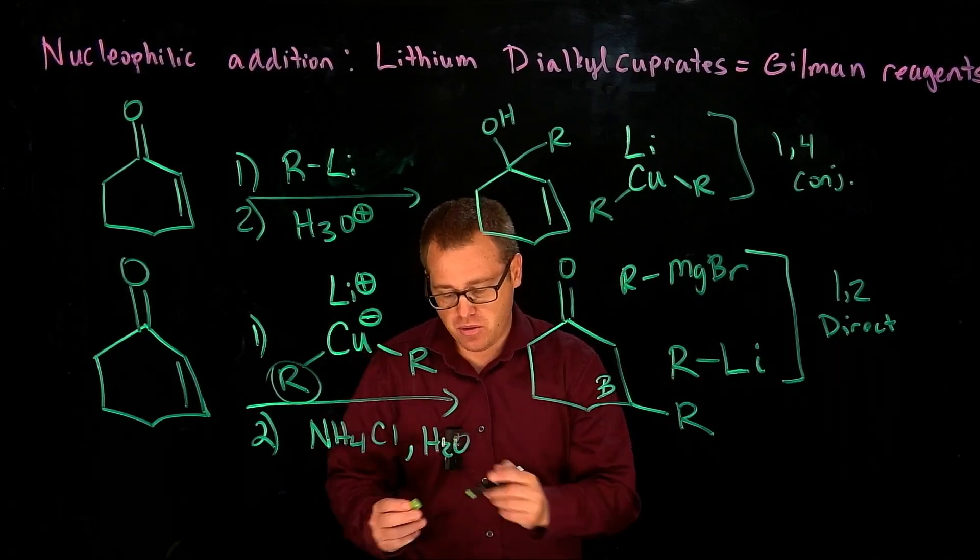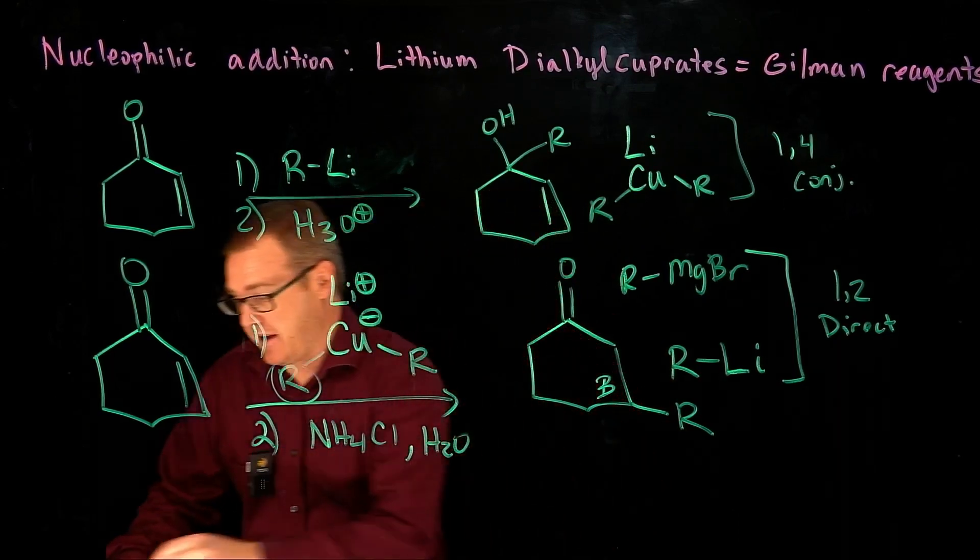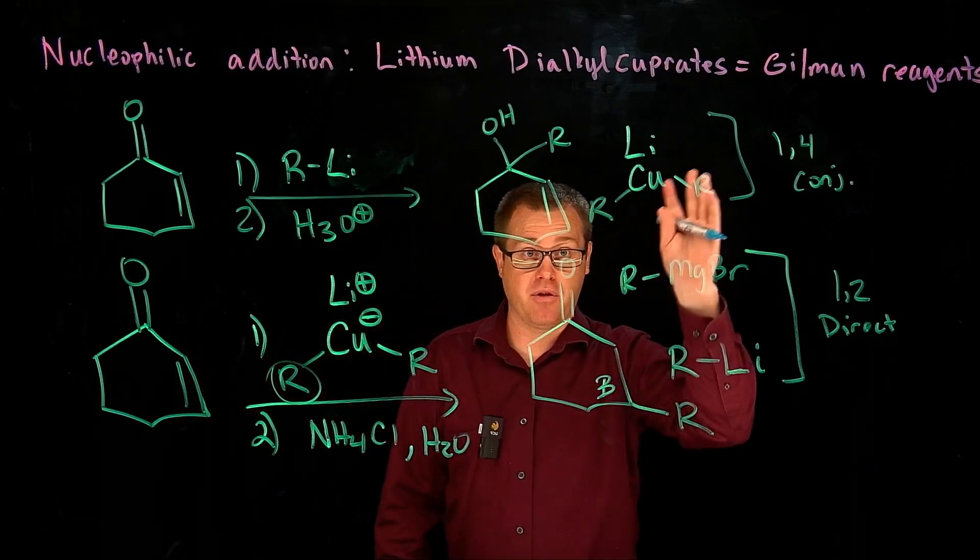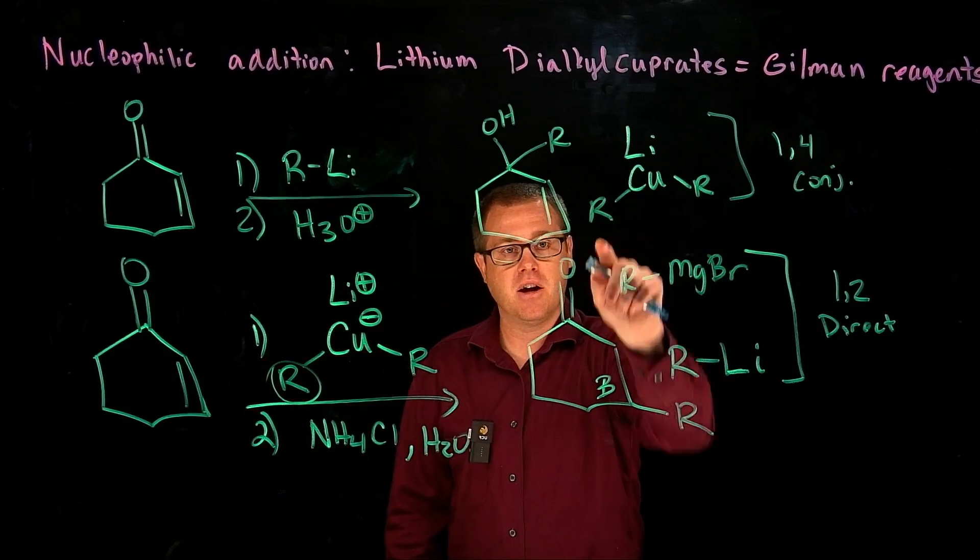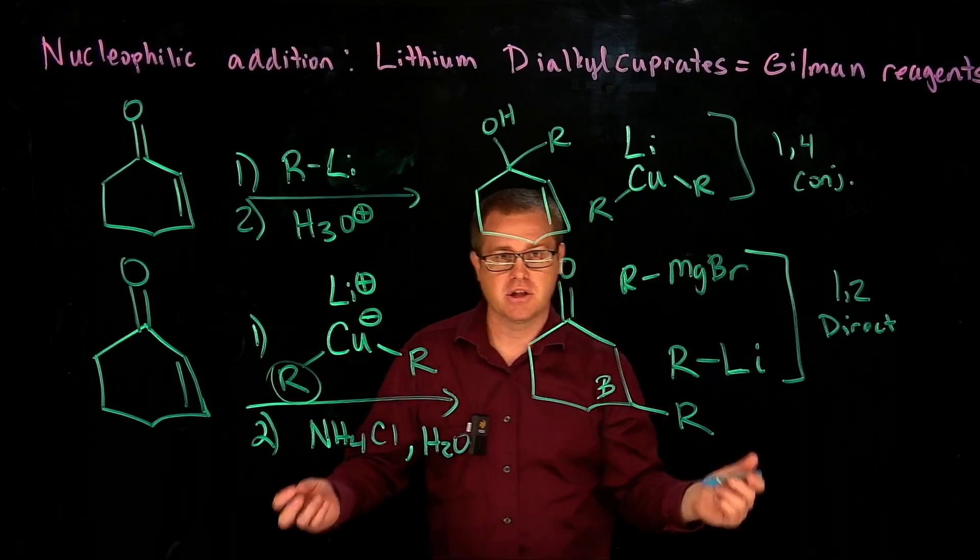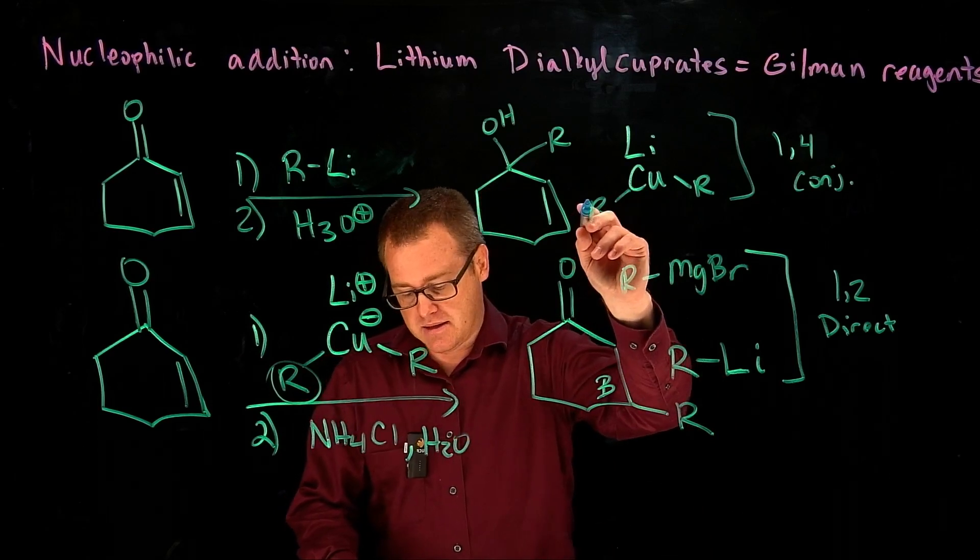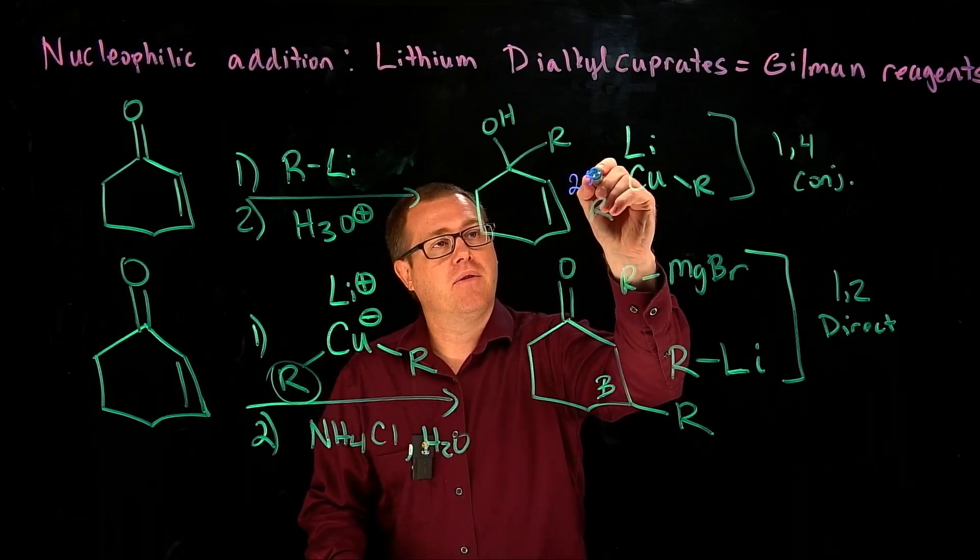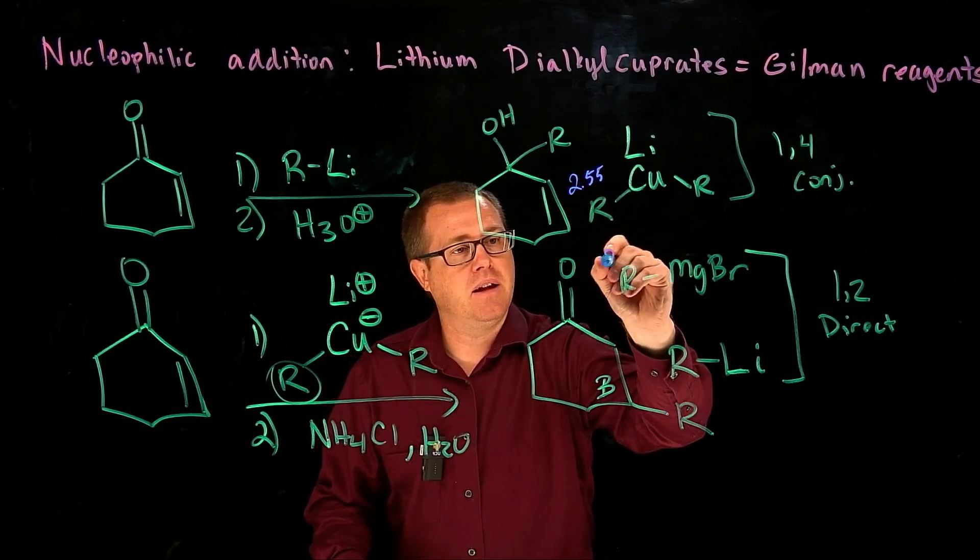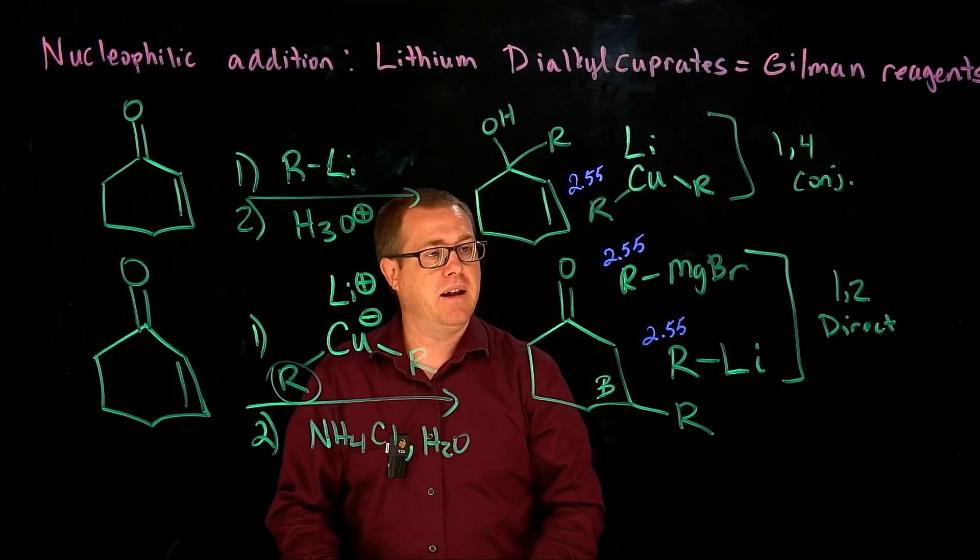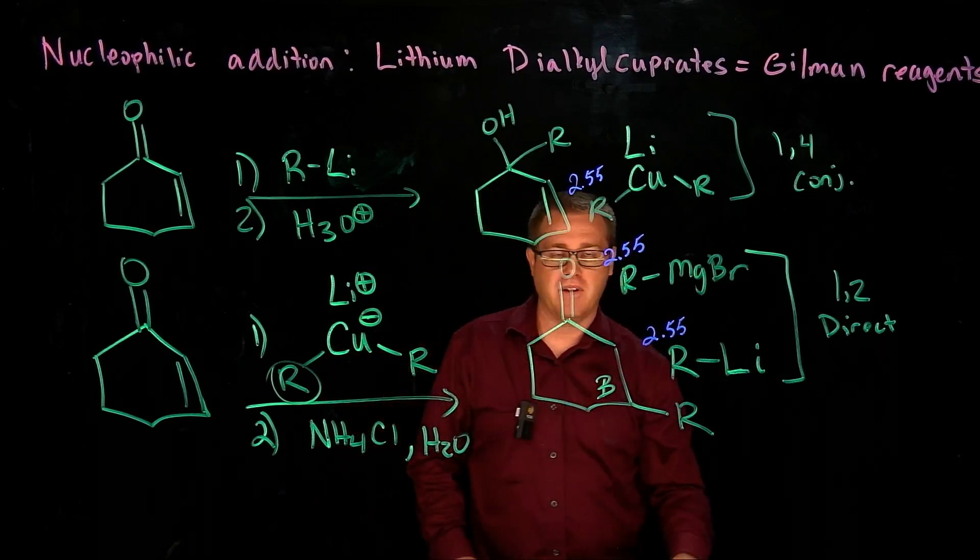So it has to do with the electronegativity difference. See, what do I mean by that? Let's just say for this example, all these R's are exactly the same, some type of carbon. And so it has 2.55 electronegativity. So the electronegativity for carbon is 2.55.